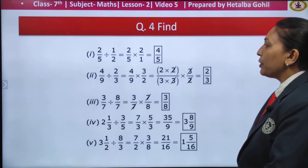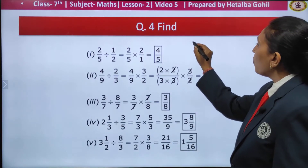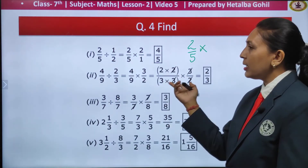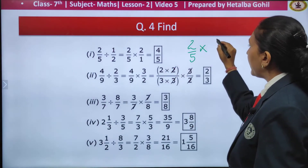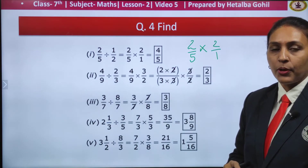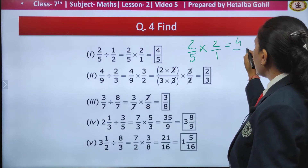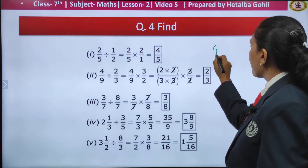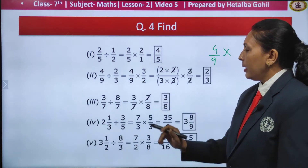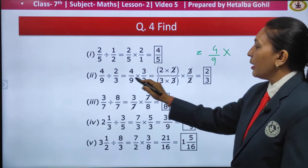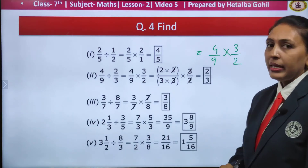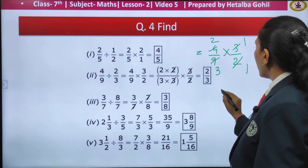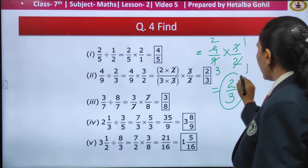Question number 4: division of a fraction with a fraction. First: 2 by 5 divided by 1 by 2. I change the division sign to multiplication and flip the second number to get 2 by 1. As I cannot cut any of the numbers, I multiply the numerators and denominators — I get my answer as 4 by 5. Similarly the second one: 4 by 9 divided by 2 by 3. I write it as 4 by 9 multiplied by 3 by 2. I can cut the numbers here, and after cutting, 2 by 3 is my answer.